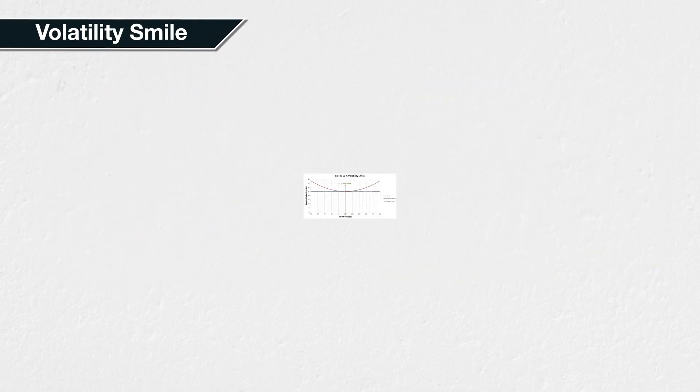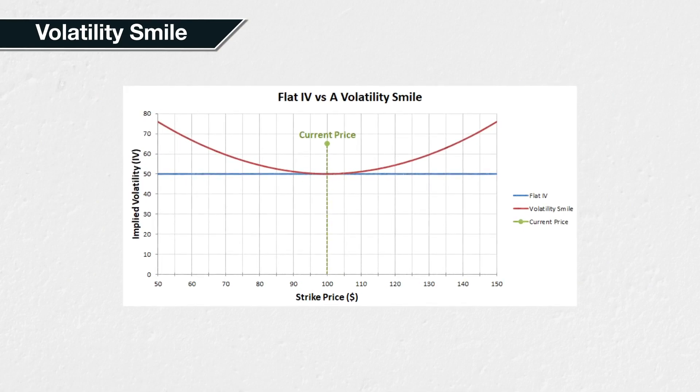Here we have a chart of the implied volatility for each strike price in a given expiration of an asset that has a current price of $100. The blue line on this chart illustrates what it would look like if implied volatility were the same for each strike price — for every strike from $50 to $150, the implied volatility is 50% in this example.